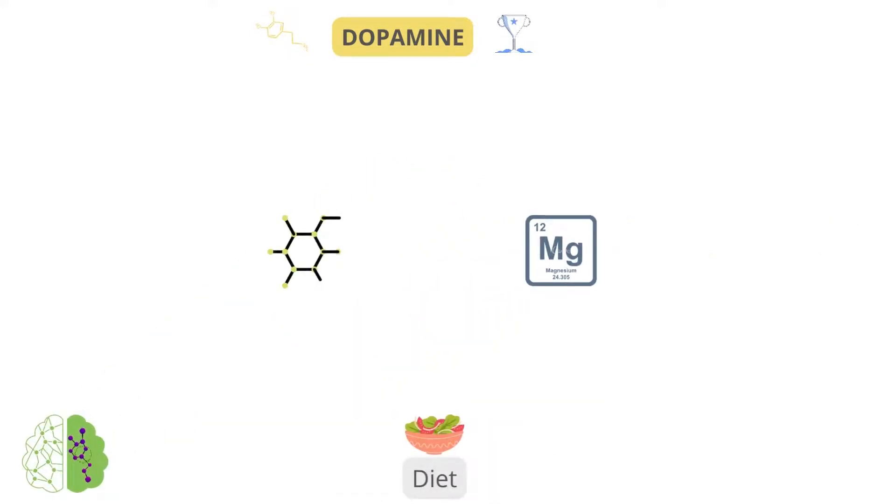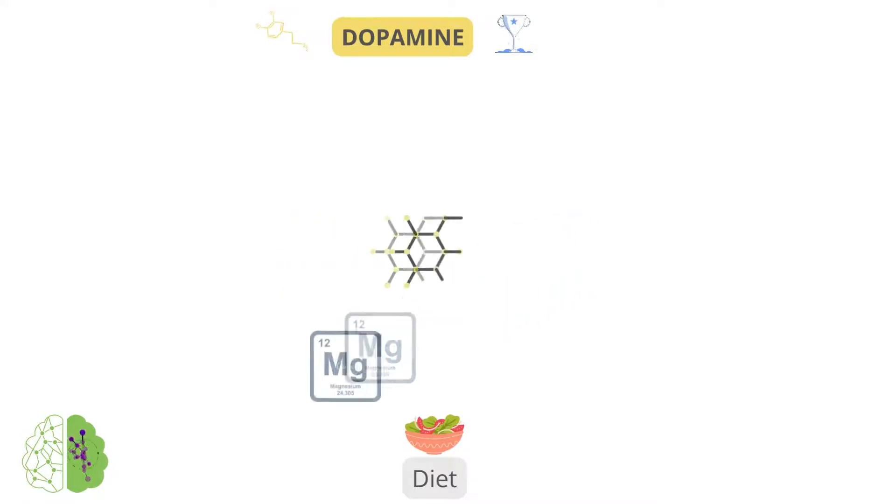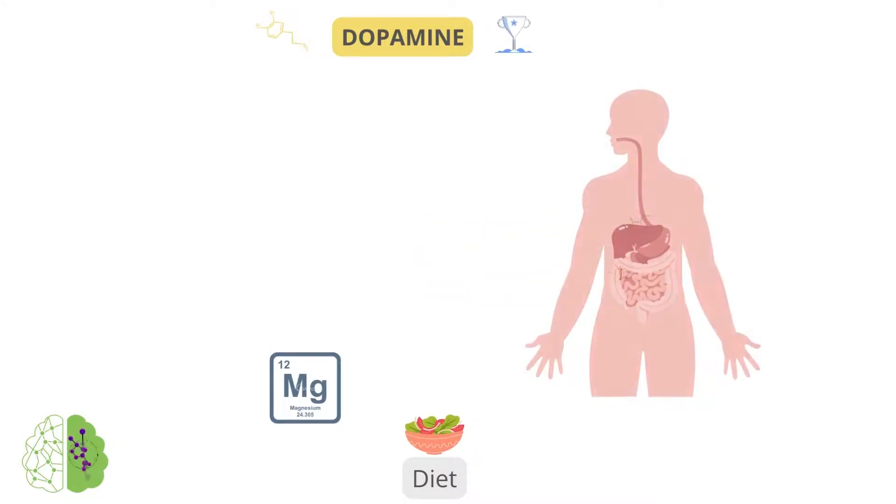Eat a diet rich in tyrosine-containing foods and magnesium. These are the components needed to produce dopamine. The amino acid tyrosine enters your body, where it is absorbed and travels to your brain, where it is changed into dopamine.